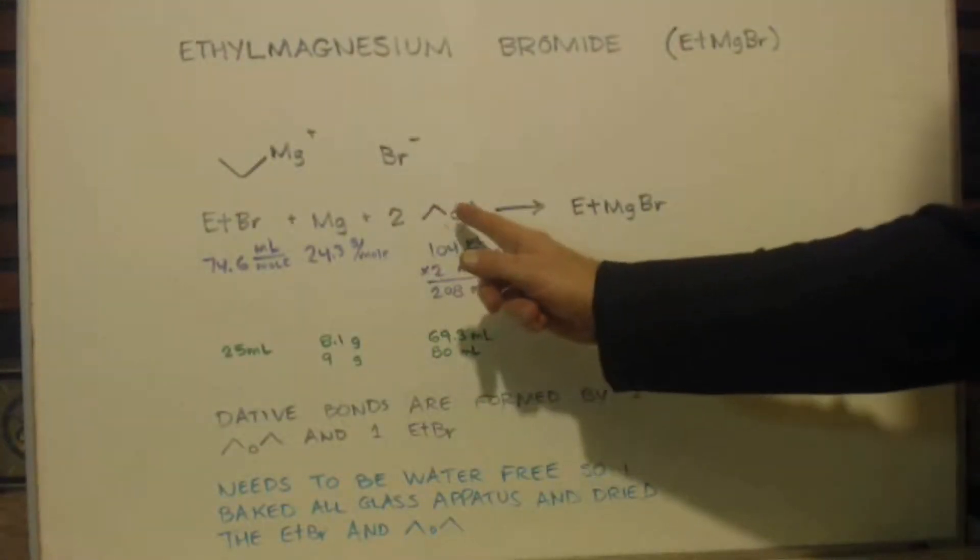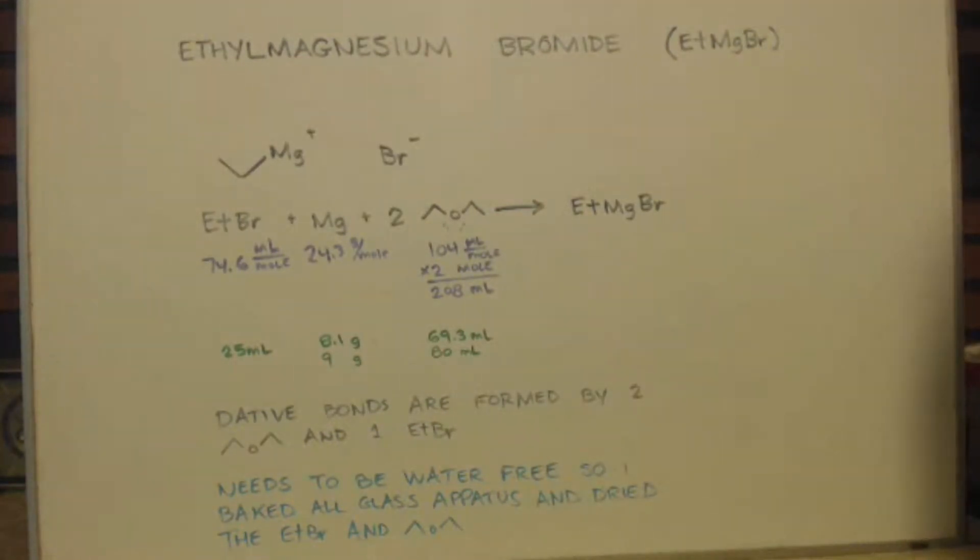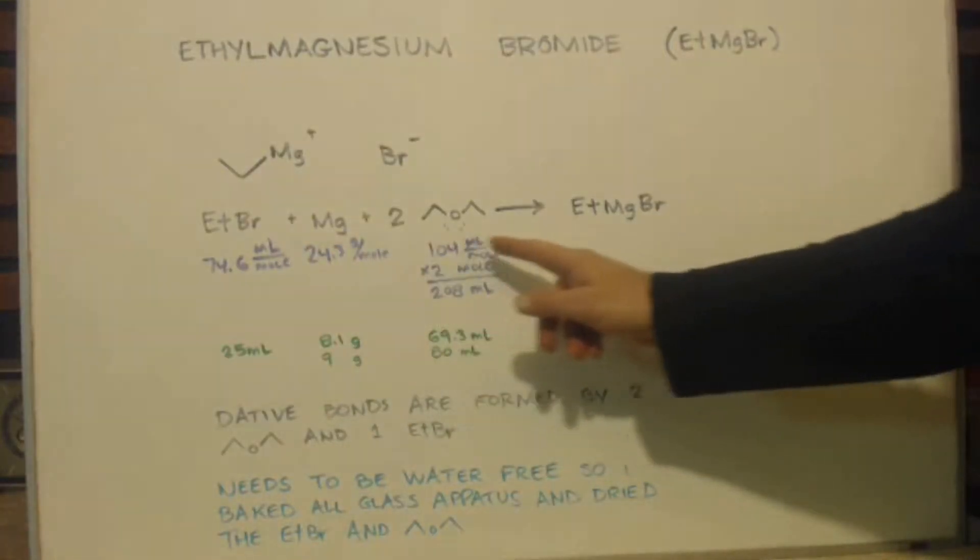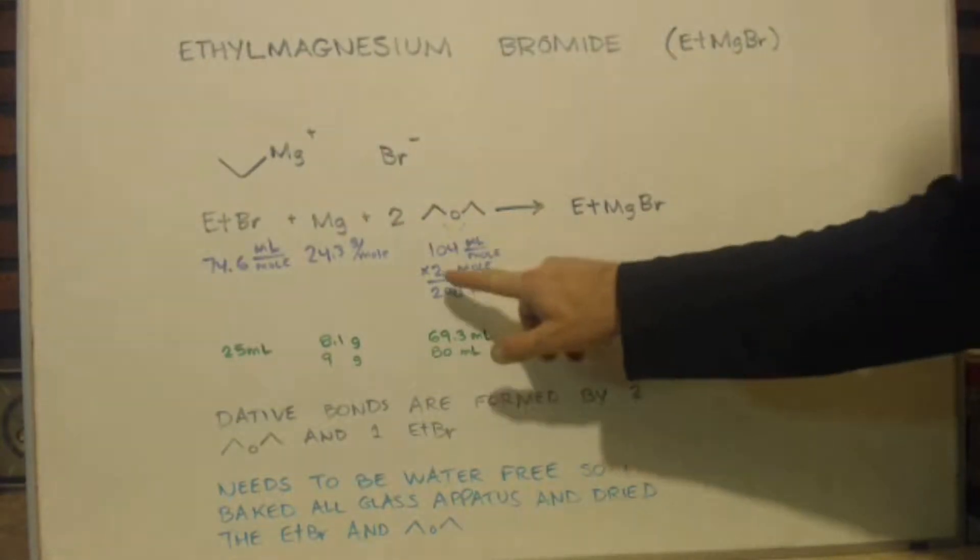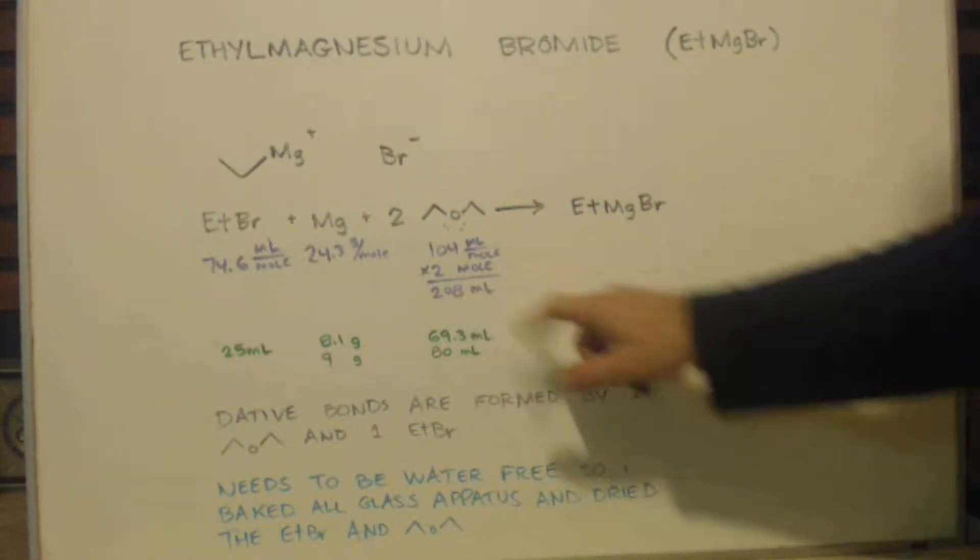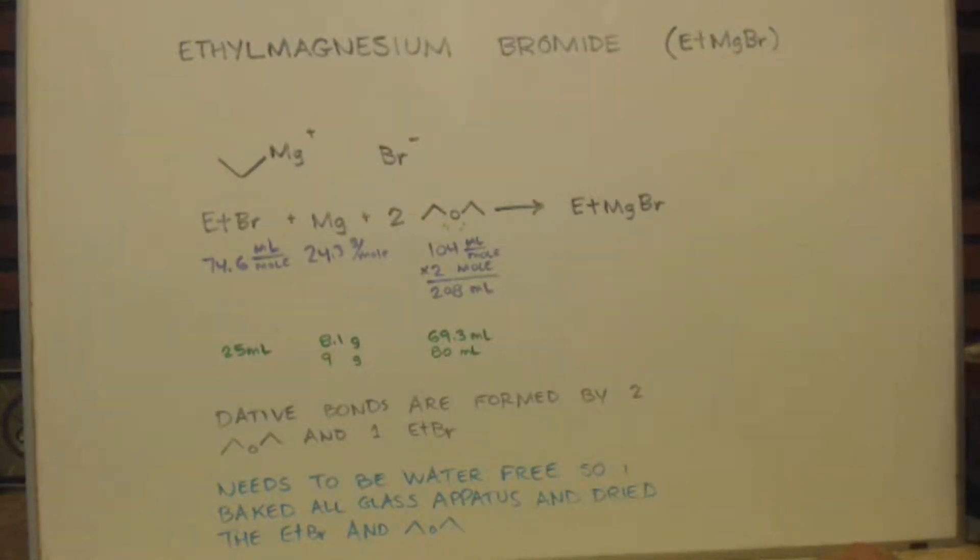I've got some magnesium and two diethyl ethers for every mole of these, right? I got my molar volume, molar mass of each thing. Now you can see this needs two moles, so I doubled the molar mass and I got 208 milliliters.